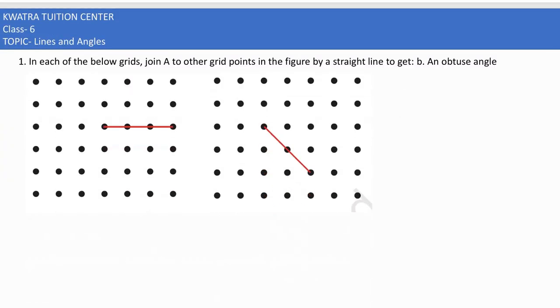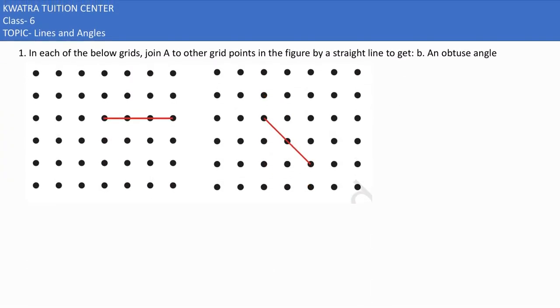Now the B part of it says that we have to complete an obtuse angle. What is the obtuse angle? Greater than 90 degrees. So you can extend it left ways. This is the obtuse angle we have.